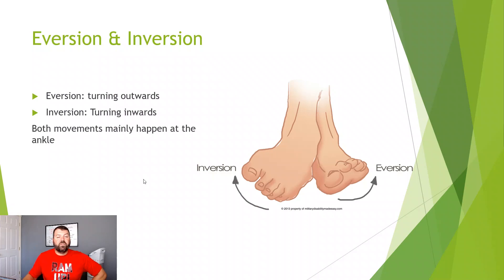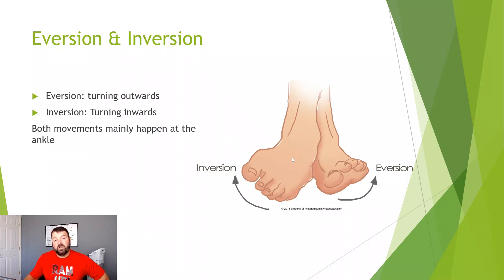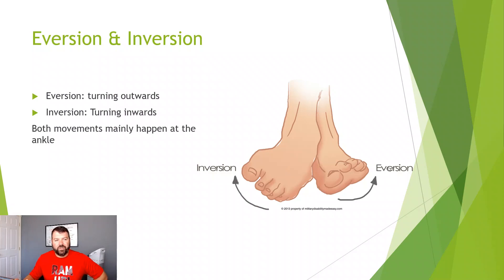Here is a picture of the ankle showing inversion and eversion. This is the left ankle — inversion you're going inward, and eversion you're going outward. Usually you have a lot of motion inwards, which commonly results in an ankle sprain. In eversion you usually don't have a lot of motion — usually about 10 to 15 degrees.